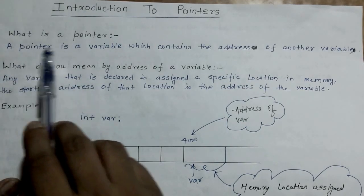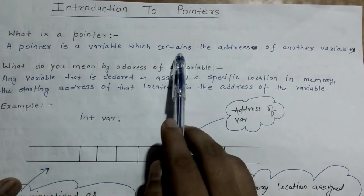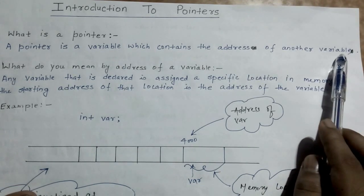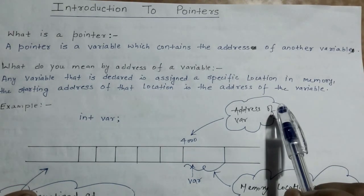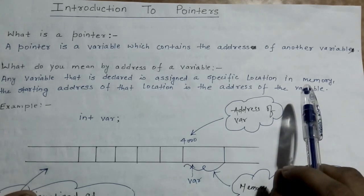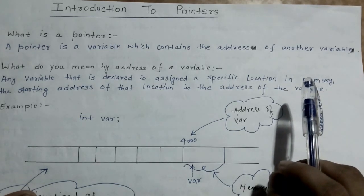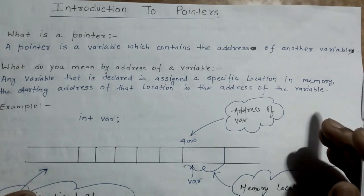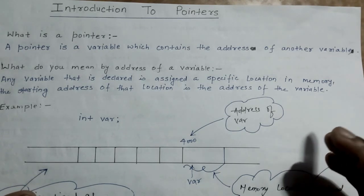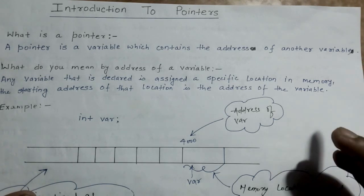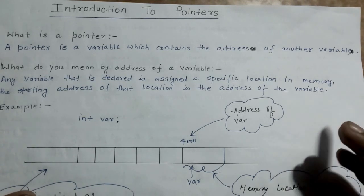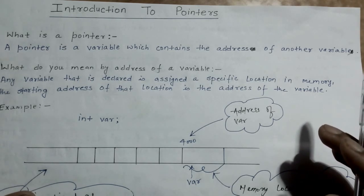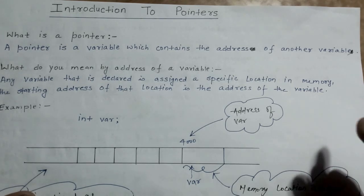A pointer is a variable which contains the address of another variable. Pointer is also a kind of variable which contains the address of another variable. The other variable can be an integer variable, a boolean variable, a double variable, a float variable, or any type of variable. The only job of a pointer is to contain the address of a variable.